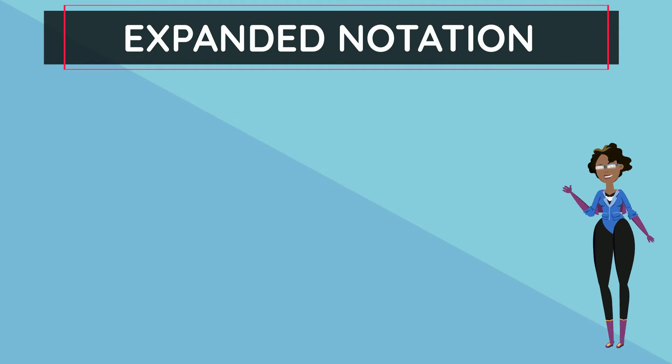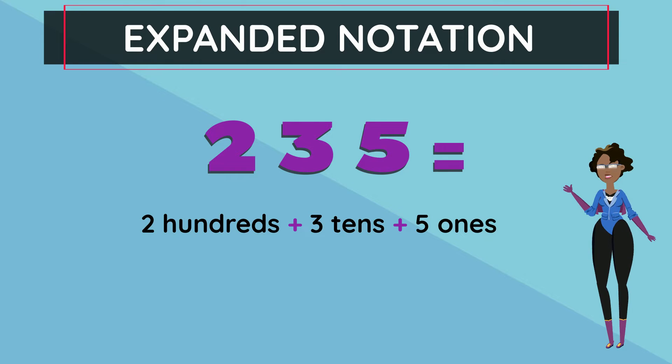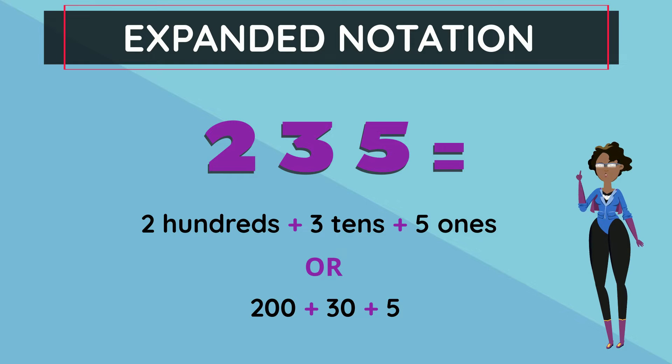Let's look at our first number. We know that 235 is two hundreds added to three tens added to five ones which is the same as saying 200 plus 30 plus 5.